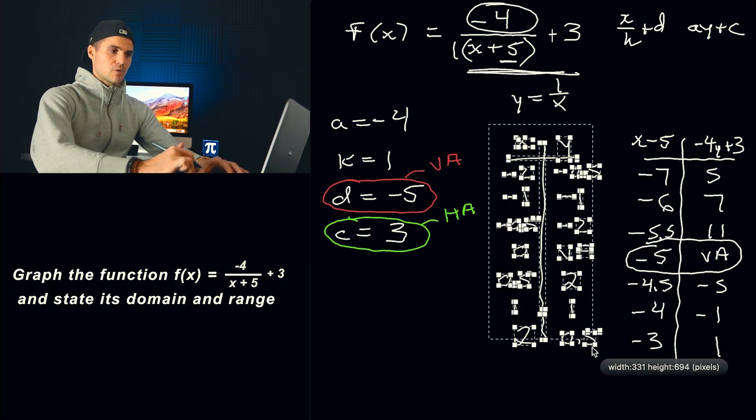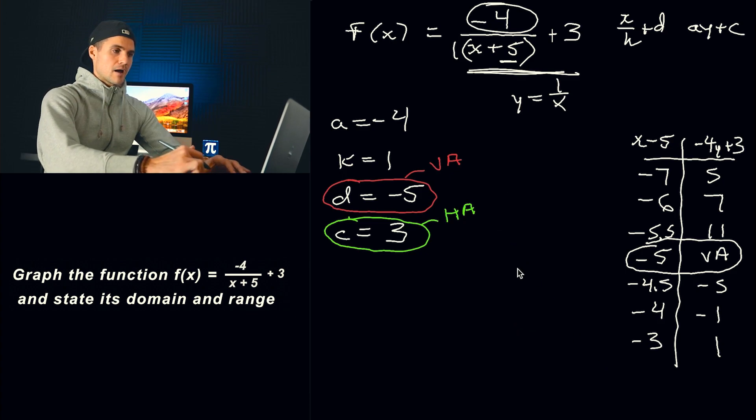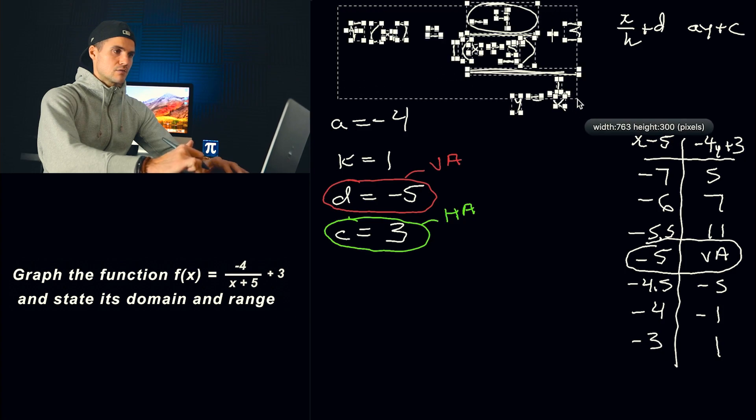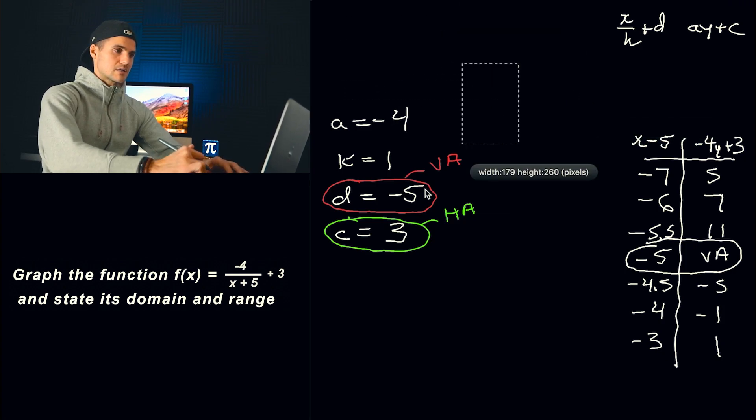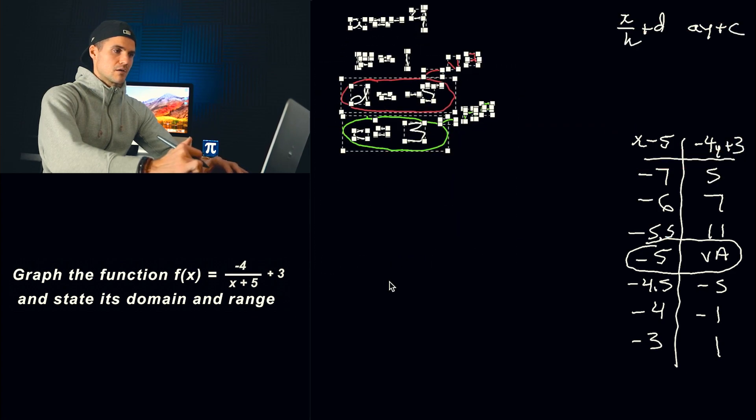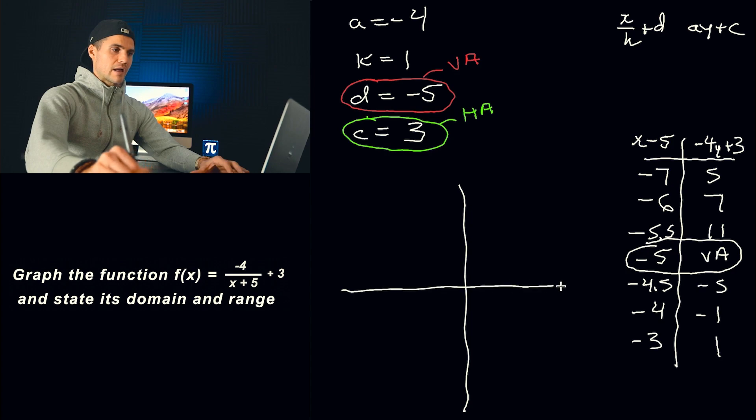All right. So to graph this, I'm going to erase this. And then I think I could probably fit the graph. Actually, you know what? Let's maybe take all of this up here and erase it. I'm going to move this up here, give myself some more room. Okay. So let's make the axes. Now, first thing, as I mentioned, that I like to plot first are the asymptotes.